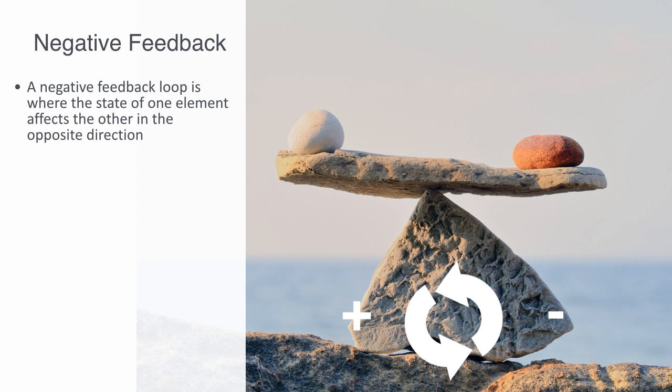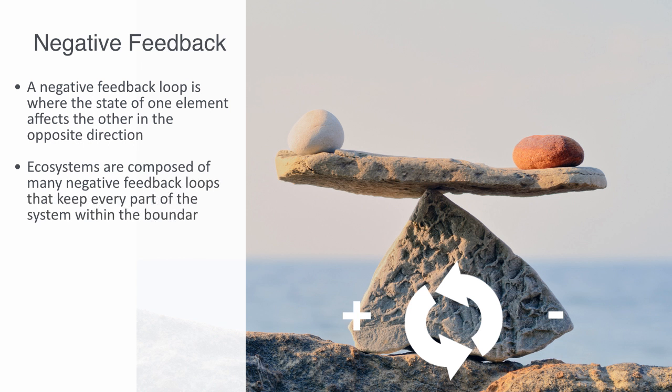Negative feedback can be identified as providing stability. All ecosystems are composed of many negative feedback loops that keep every part of the system within the boundaries necessary for the whole system to continue functioning.